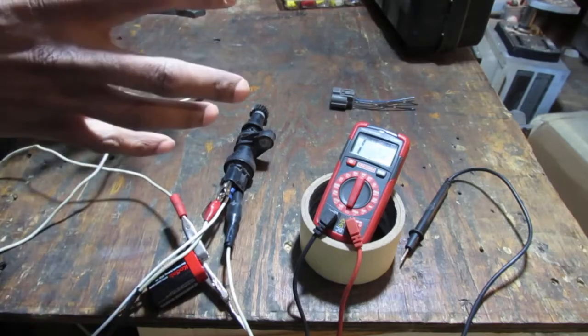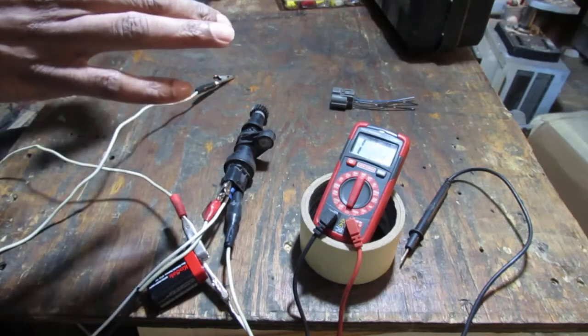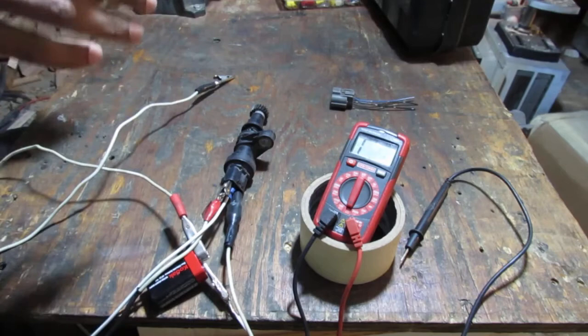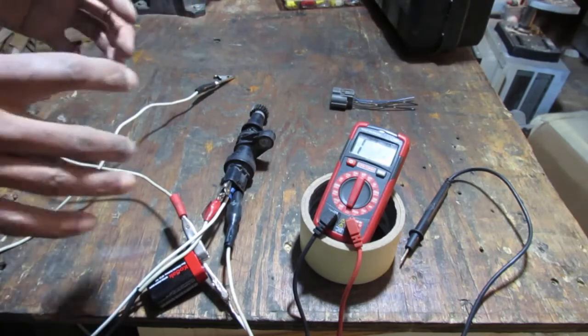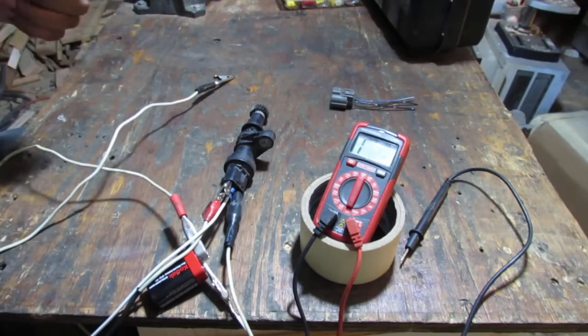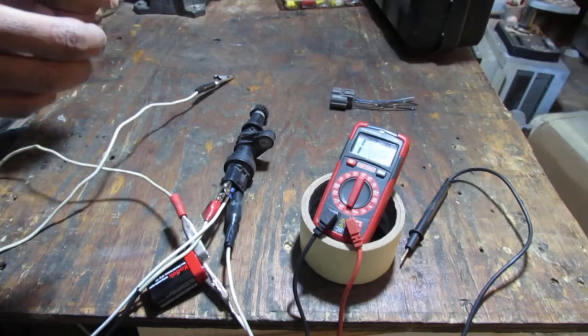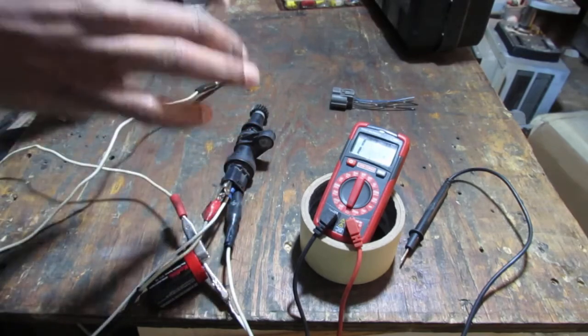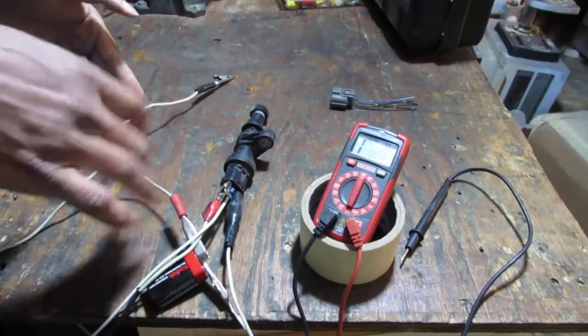And this really refers to the direction of conventional current flow, which is just going to be positive to negative. So that's what the source-in does. Now, the continuity is what we're going to check.